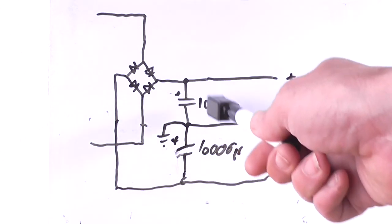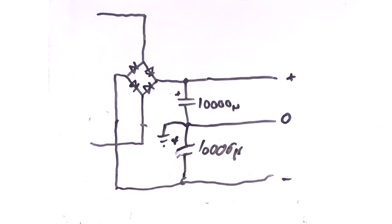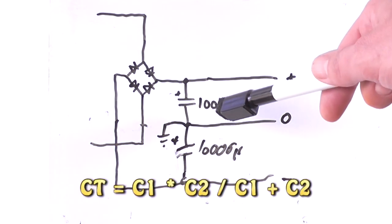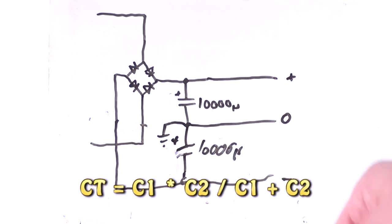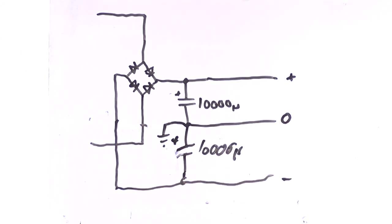You can calculate what the overall capacitance is going to be, and it's the same calculation as resistors in parallel. Its total capacitance is C1 multiplied by C2 divided by C1 plus C2. So in this case that's going to equal 5000 microfarad.